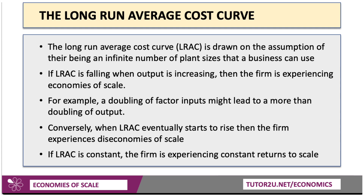A doubling of their inputs of land and labour and capital might lead to a more than doubling of output — increasing returns — and therefore unit cost goes down. Conversely, when average cost eventually starts to rise, then unit costs go up, and we call that diseconomies of scale. And there may be a range of output where long-run average cost is constant, and we say that the firm is experiencing constant returns to scale.